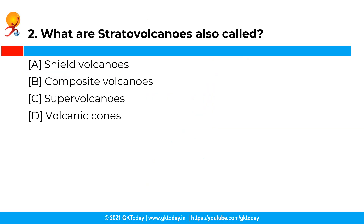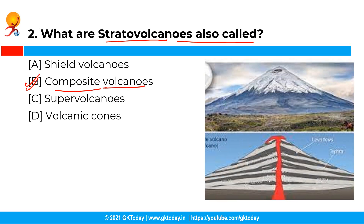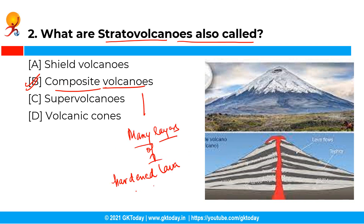The next question is: what are strato volcanoes also called? The correct answer is option B — composite volcanoes. Composite volcanoes are also called strato volcanoes and are built of many layers of hardened lava.